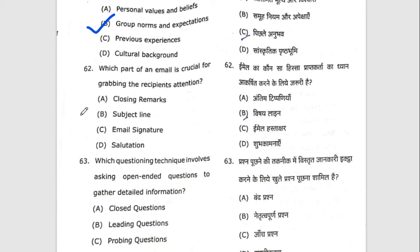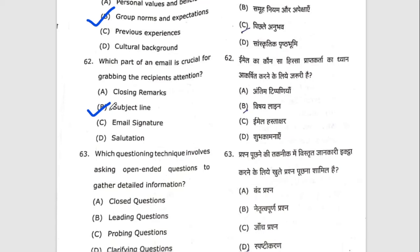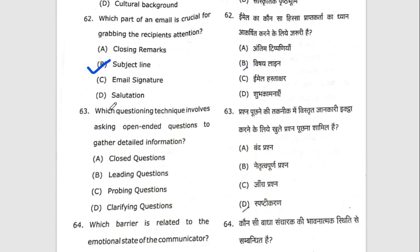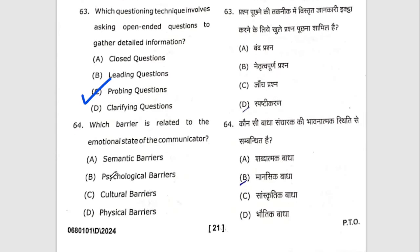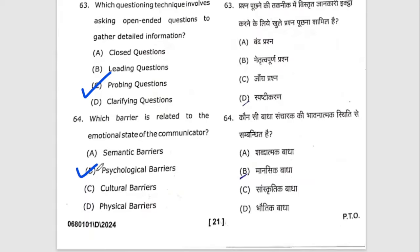Sixty-second question: which part of an email is crucial for grabbing the recipient's attention? The right option is B — subject line. Sixty-third question: which questioning technique involves asking open-ended questions to gather detailed information? The right option is probing questions. Sixty-fourth question: which barrier is related to the emotional state of the communicator? The right option is B — psychological barriers.